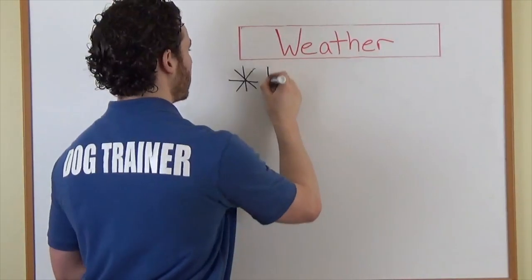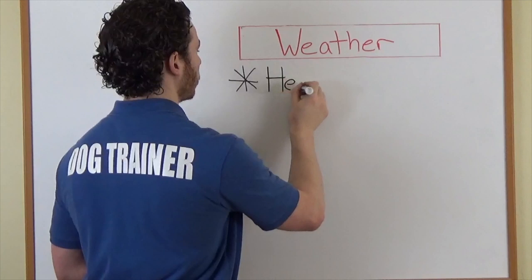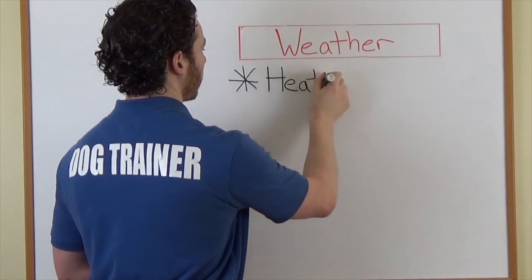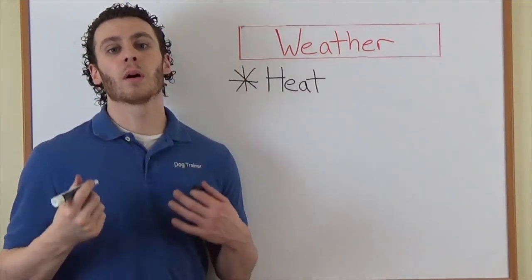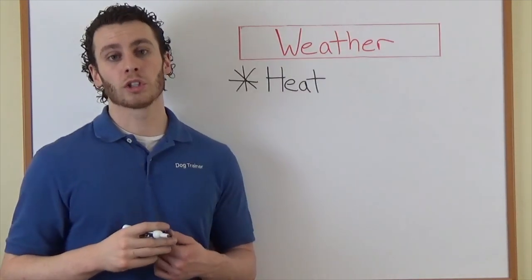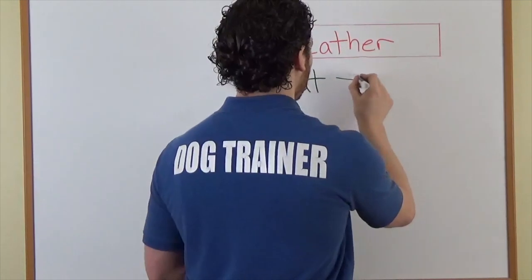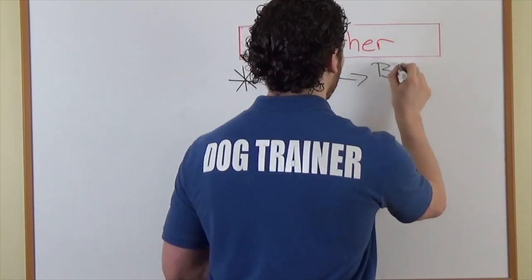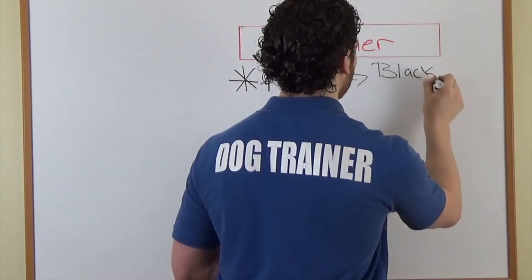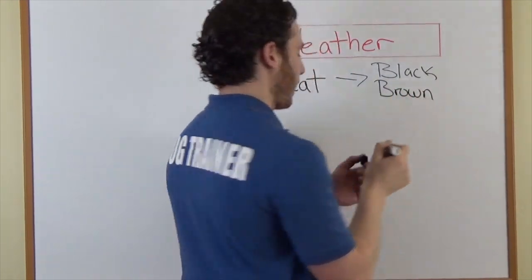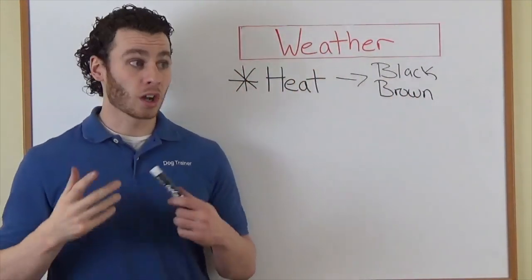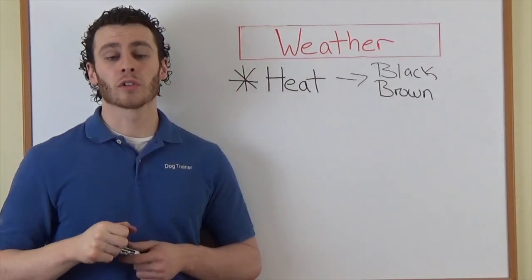First thing I want to talk about is heat and just some general rules and things to remember. Number one is that dogs overheat much quicker than humans, especially if your dog has a dark coat. Black dogs, brown dogs will absorb heat much, much faster, and it is not uncommon for dogs to suffer from heat stroke.